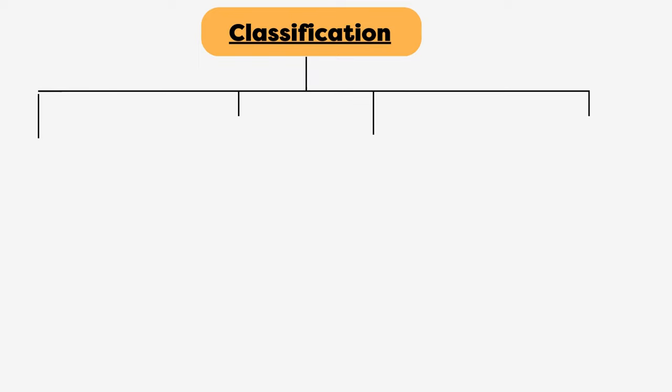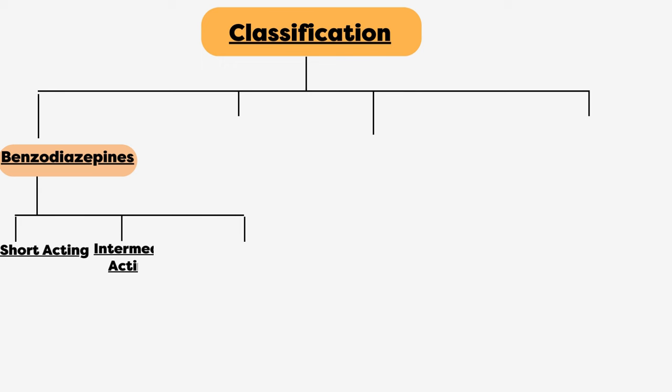The first class of drug is benzodiazepine, which we further divide into short, intermediate, and long-acting benzodiazepines. To easily memorize examples, we have a simple mnemonic: TOM STEAL CHLORO FLUORO DRUG.